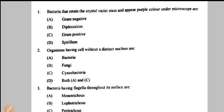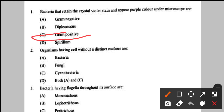Question number 1: bacteria that retain the crystal violet stain and appear purple color under microscope. We know that when we perform gram staining, the crystal violet purple stain is retained by the thick peptidoglycan layer of gram positive bacteria. Gram negative bacteria have a pinkish appearance under the light microscope. So those retaining crystal violet stain are gram positive bacteria — option C.